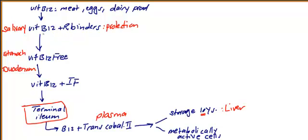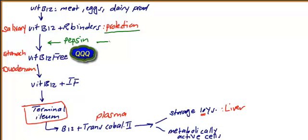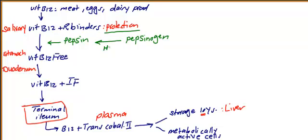In the salivary gland, you have vitamin B12 and R-binders. R-binders attach to vitamin B12 in order to protect it from HCl destruction. The enzyme responsible for making vitamin B12 free is pepsin. Pepsin comes from the conversion of pepsinogen, and what you need for that conversion is HCl. The cell responsible for HCl is the parietal cell.